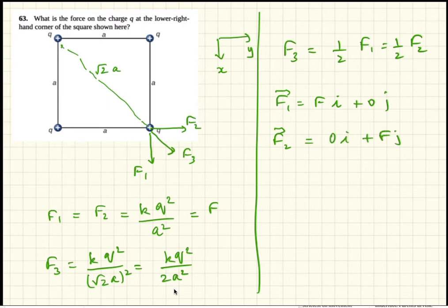F2 is 0 i plus F j, and F3 is F by 2. And remember this angle is 45 degrees and that angle is 45 degrees.